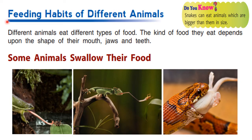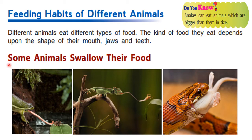Now let us see about the feeding habits of different animals. As I said earlier, some animals eat only plants, some animals eat other animals, and some animals eat both plants and animals. Different animals eat different types of food. The kind of food they eat depends upon the shape of their mouth, jaws and teeth.